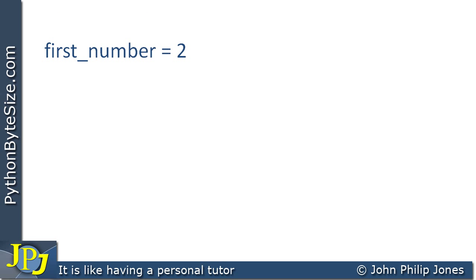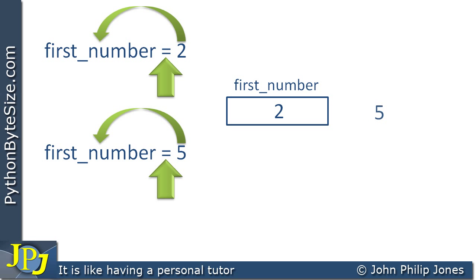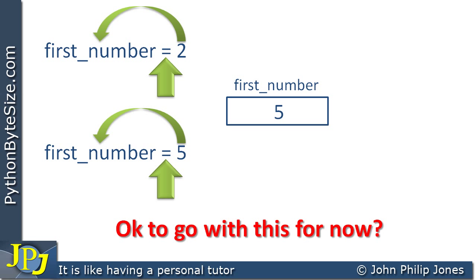However, we can simply go with this model here, where that is assigned to firstNumber, and when we have this statement, 5 is assigned to it. So the question is, are we okay to go with this for now, when we're starting off our understanding of Python? The answer is, of course we are. We could think of variables as being changed, as you see here. But this notion of something being immutable is quite important, and we'll come back to that as and when we move through our understanding of the Python language.